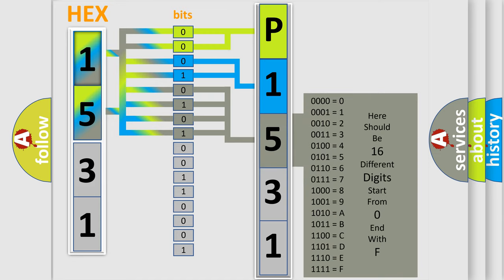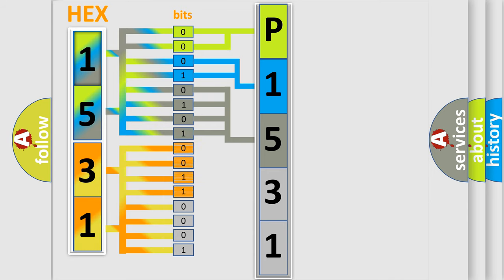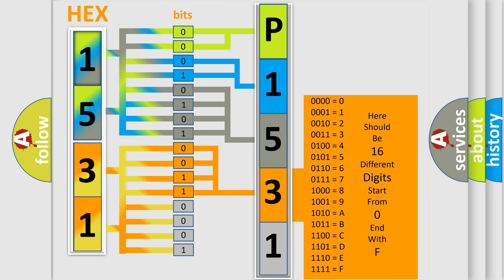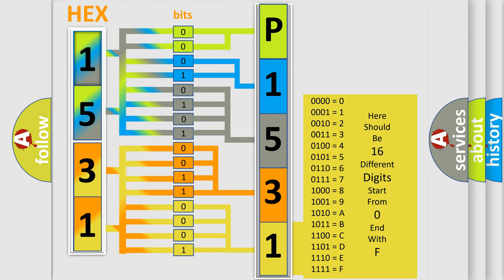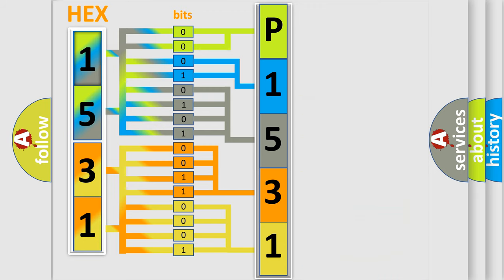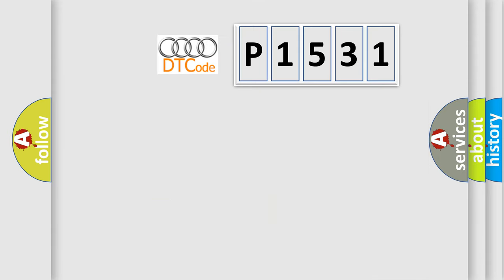The second byte is composed of a combination of eight bits. The first four bits determine the fourth character of the code, and the combination of the last four bits defines the fifth character. A single byte conceals 256 possible combinations. We now know in what way the diagnostic tool translates the received information into a more comprehensible format. The number itself does not make sense to us if we cannot assign information about what it actually expresses.